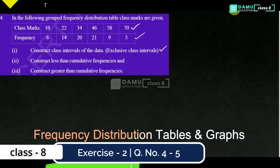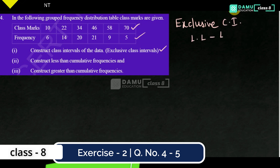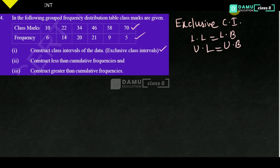Before going to that, we should know what is the lower limit, upper limit, and what exclusive class intervals are. In exclusive class intervals, lower limit will be equal to lower boundary, and upper limit will be equal to upper boundary. These are equal values in exclusive only, not in inclusive.